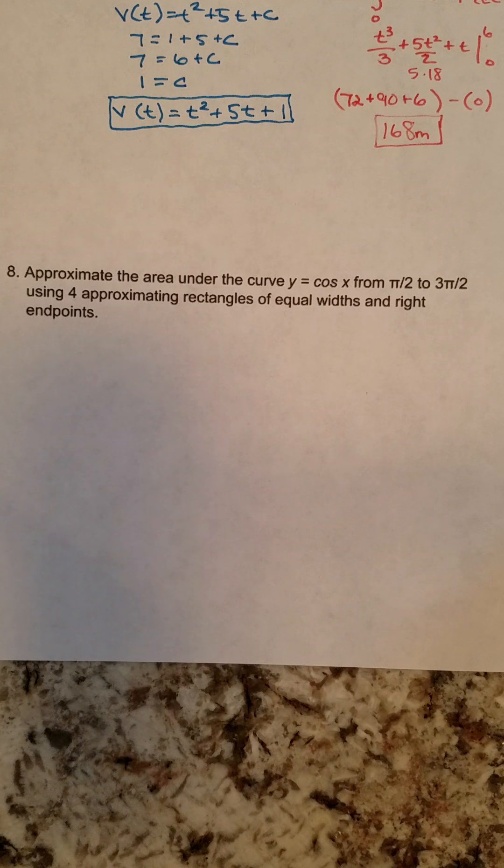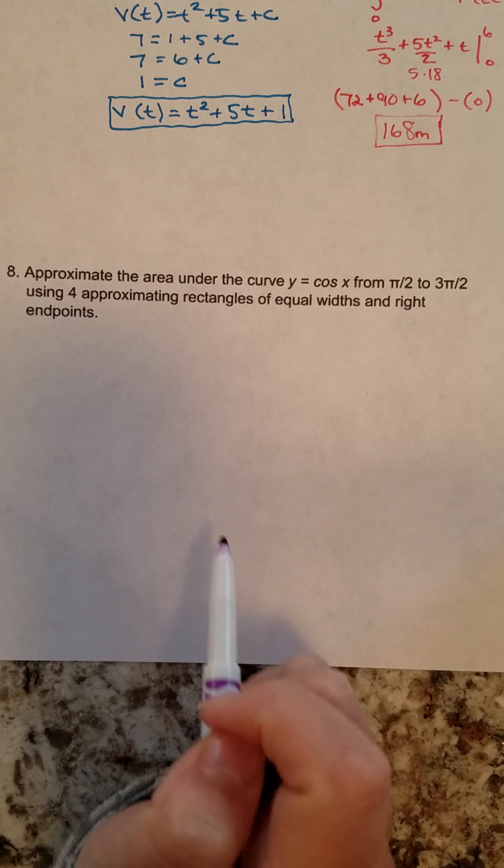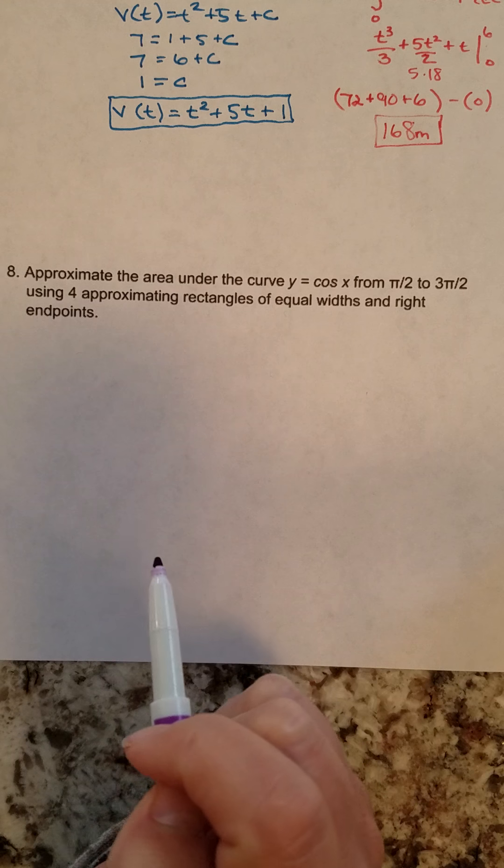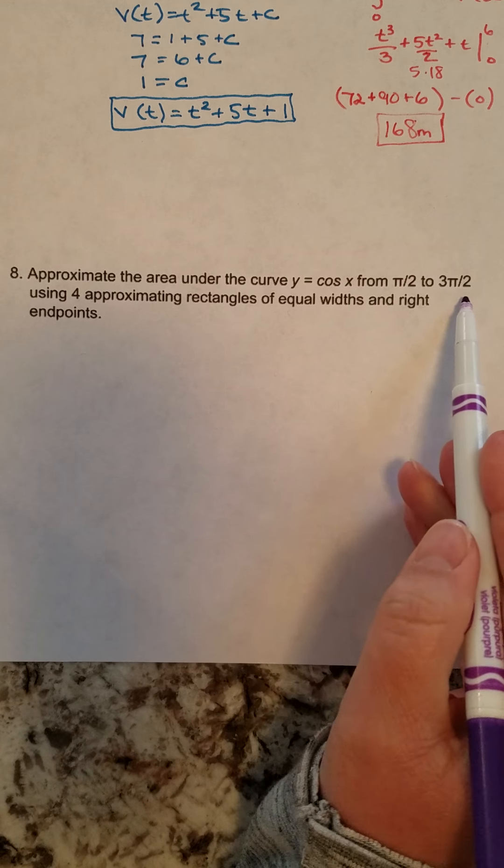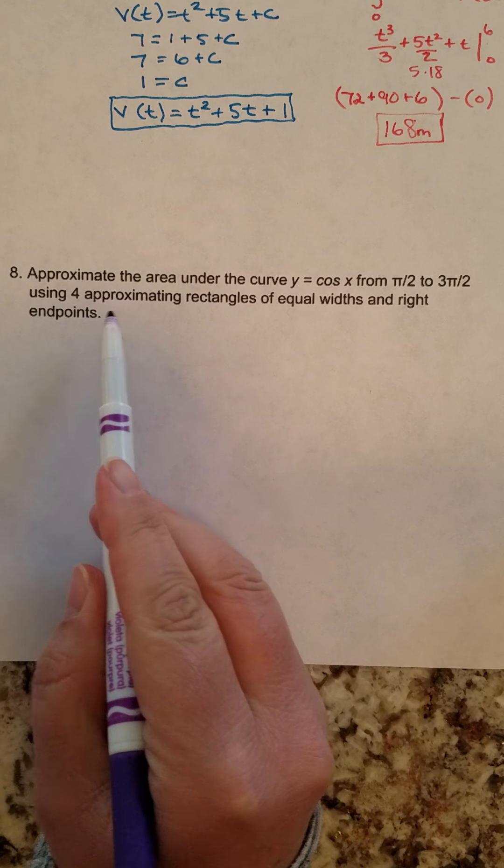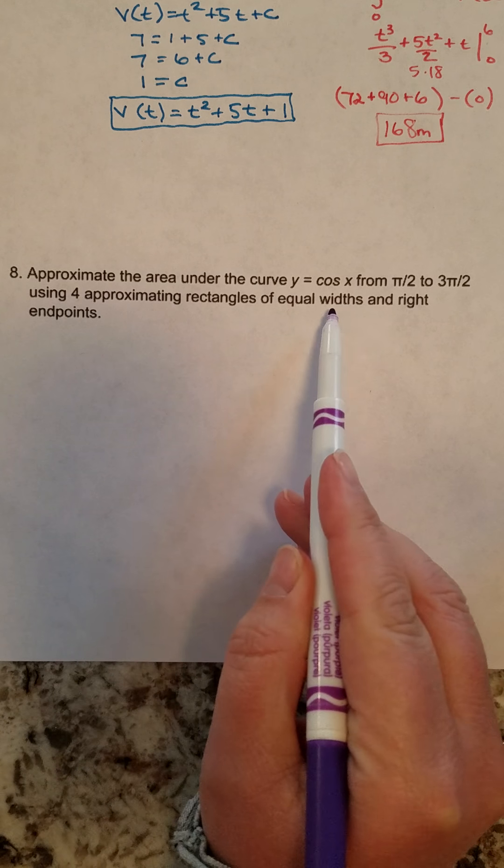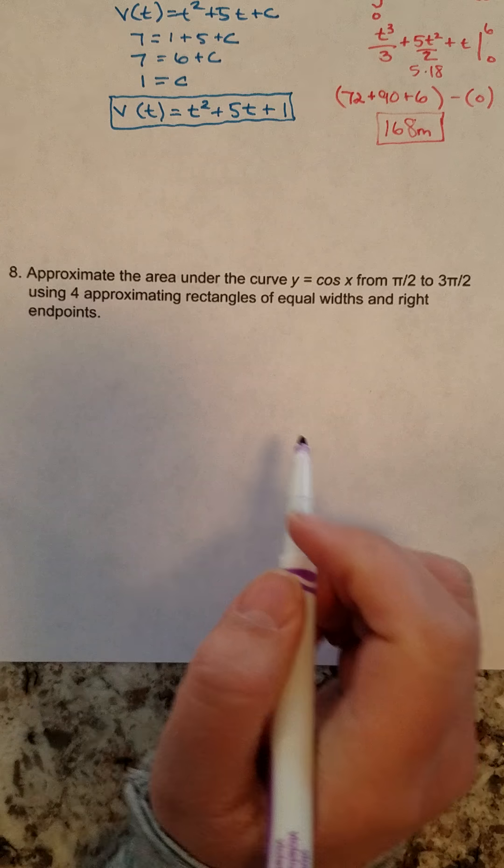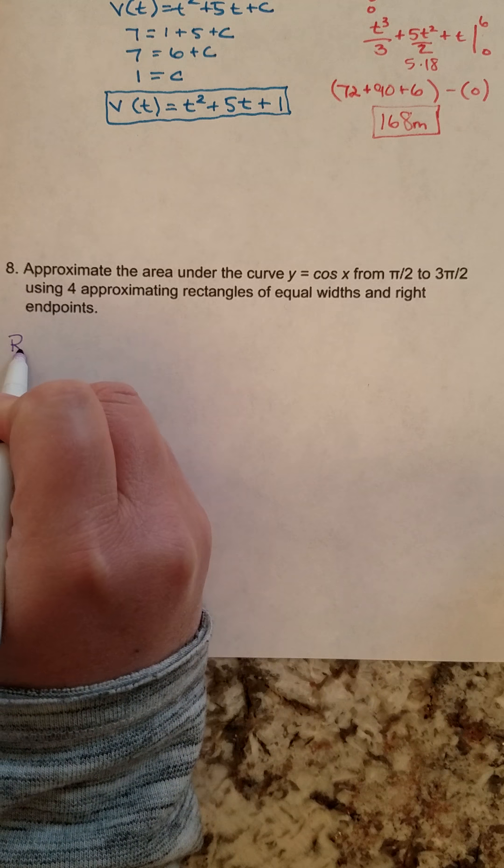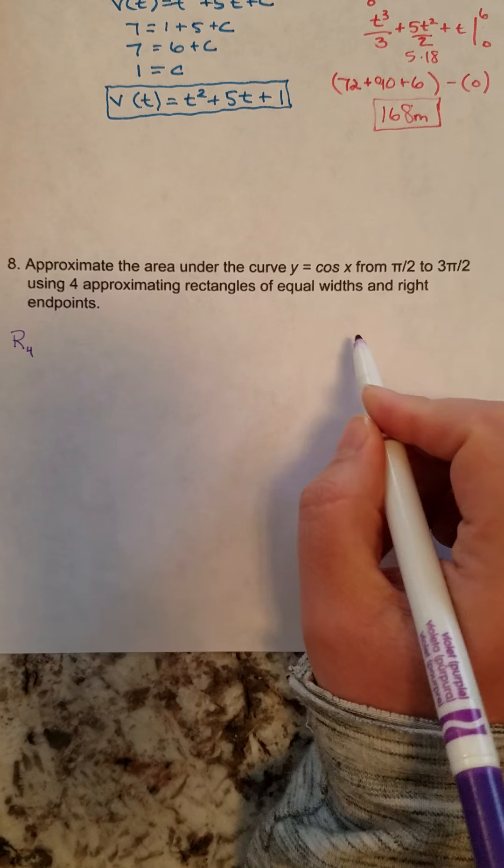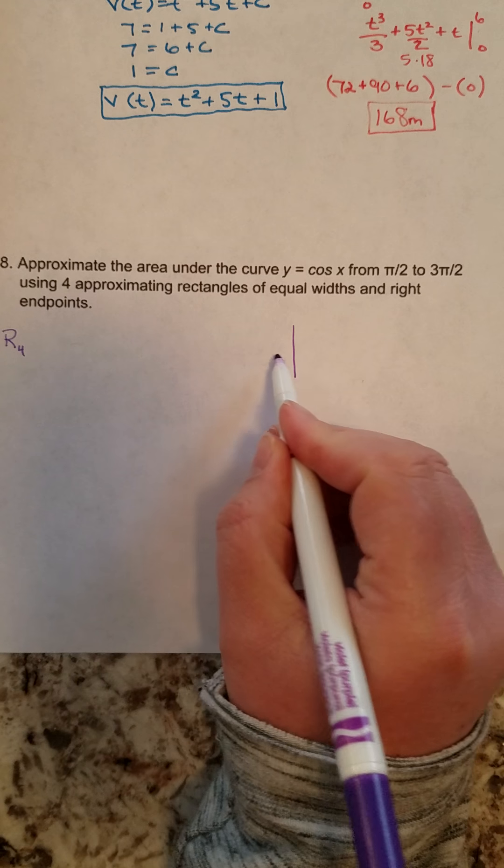Picking up with question number eight, approximate the area under the curve of y equals cosine of x from pi over 2 to 3 pi over 2 using four approximating rectangles of equal width and right endpoints. In other words, this is asking us to find R4. However, I do need a chart of values.